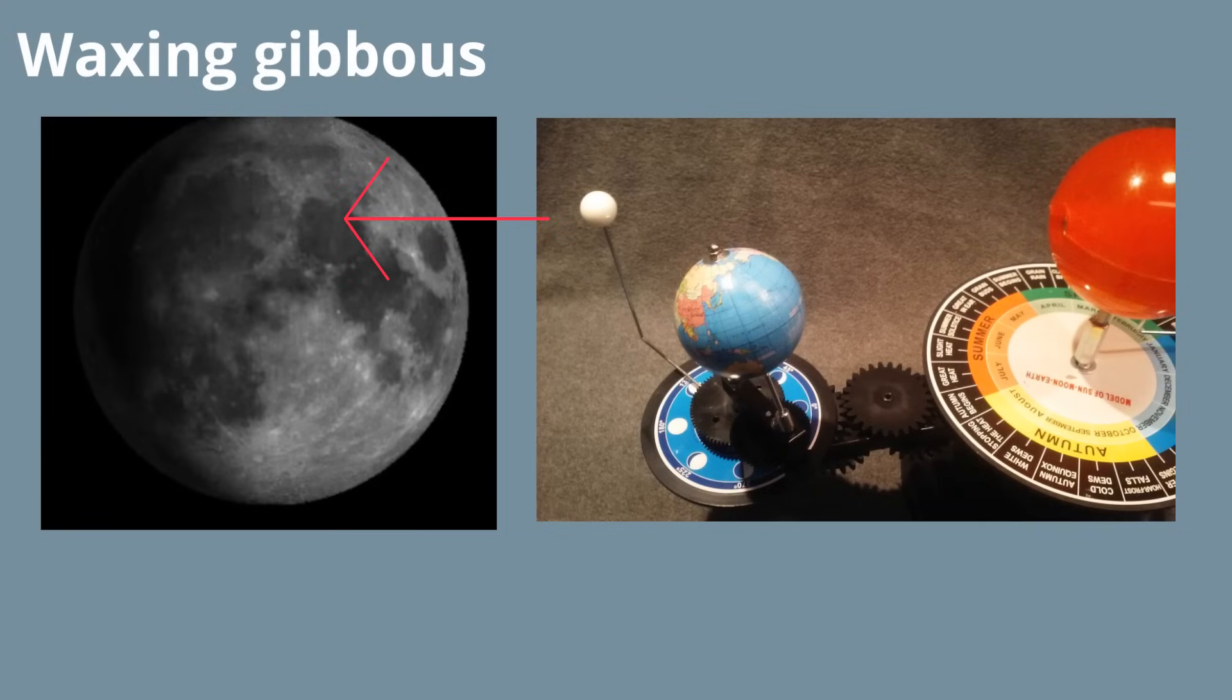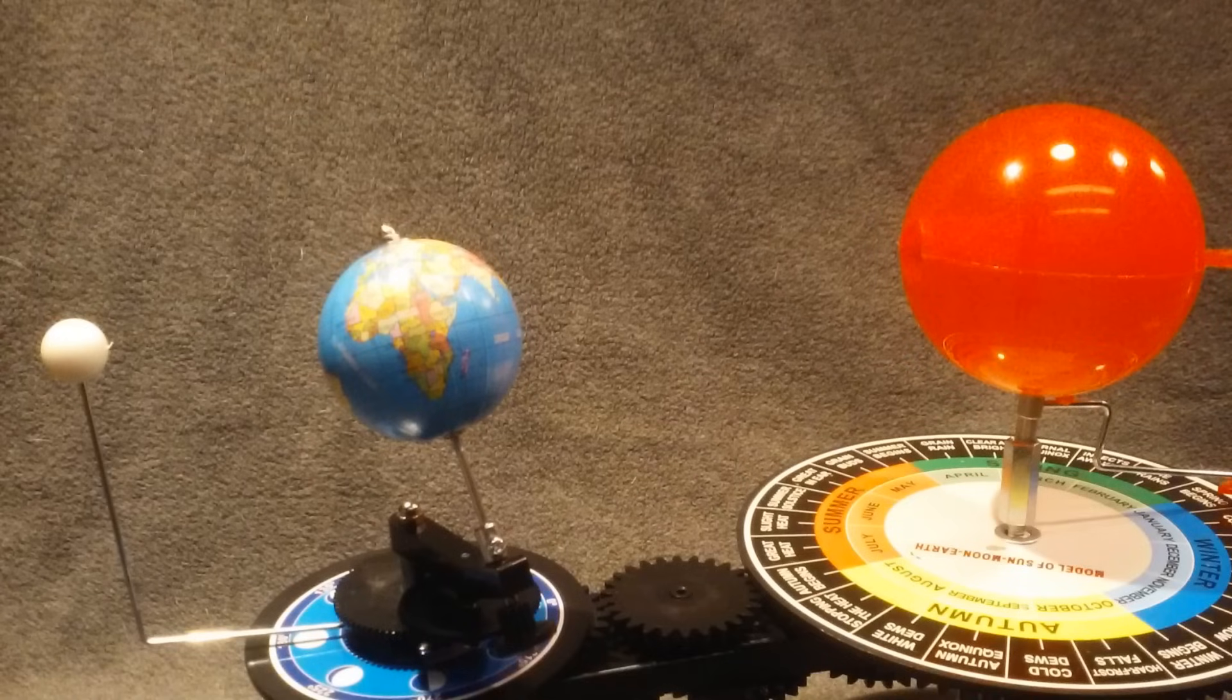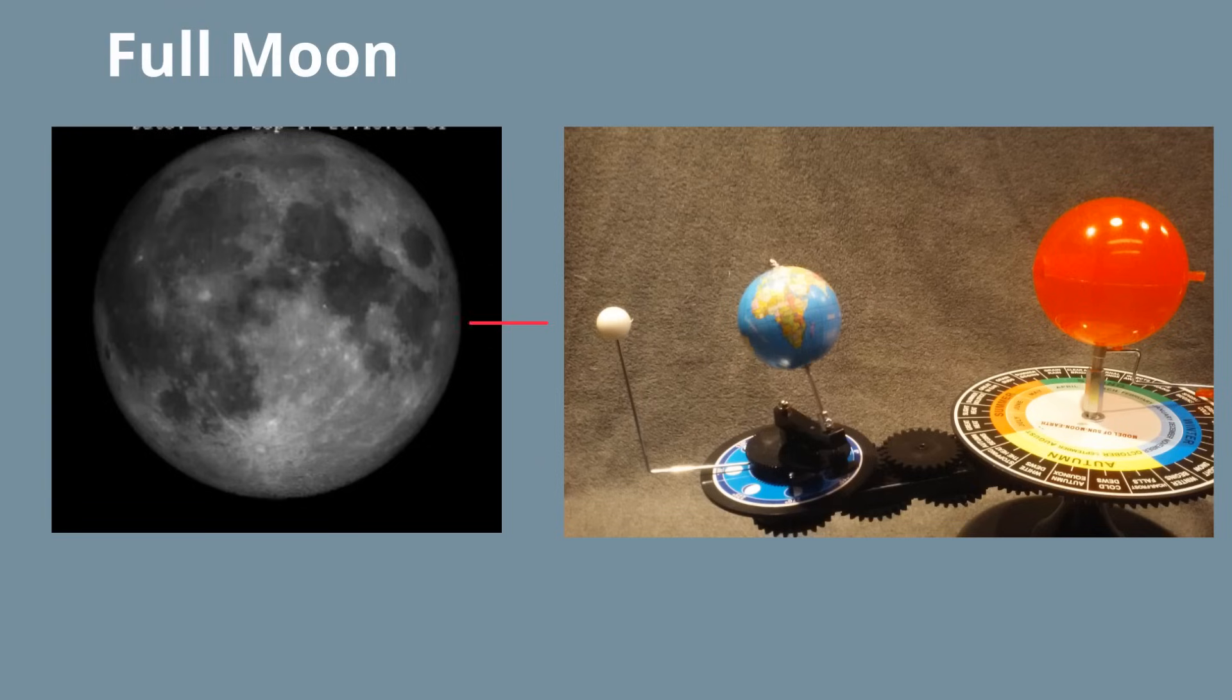After 14 days since new moon, the moon has now traveled 180 degrees and is at full moon. Here's the alignment. And here's what a full moon looks like.